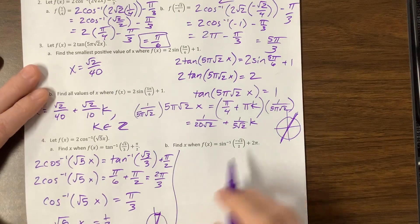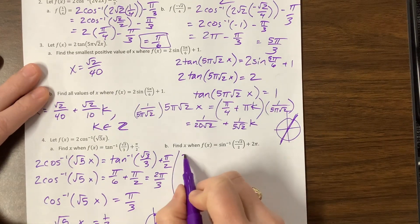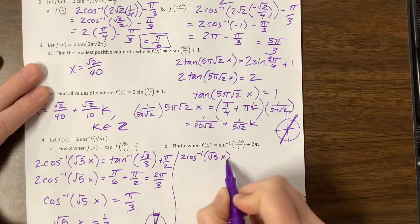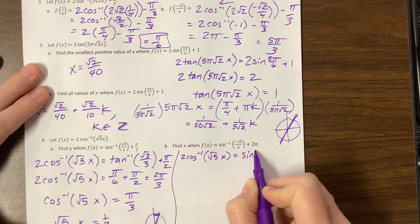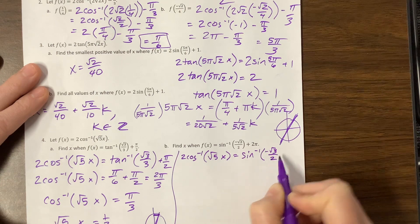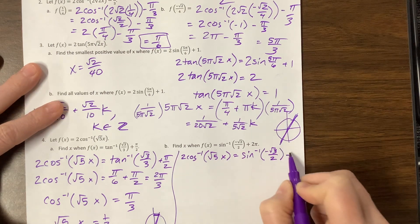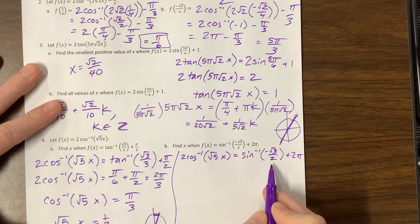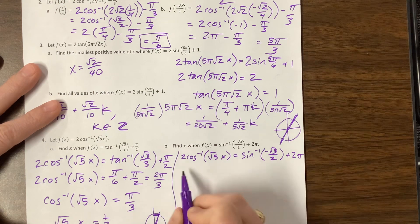Let's see if we have enough space to do the next one. So 2 inverse cosine of √5 times x equals inverse sine, or arc sine, of -√3/2 plus 2π.